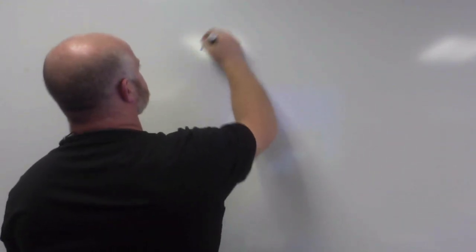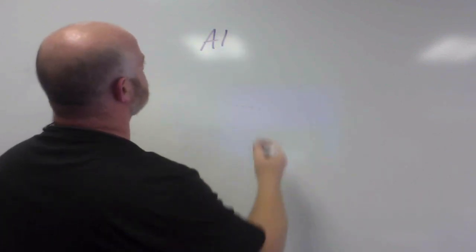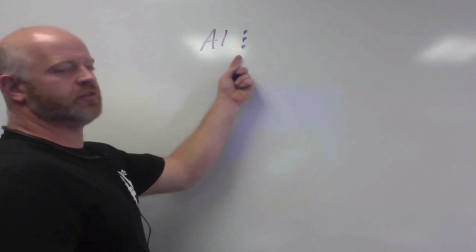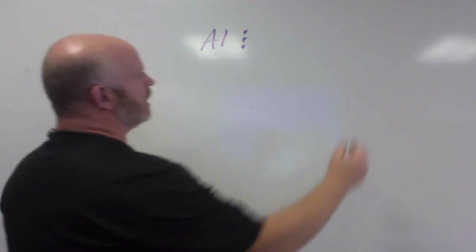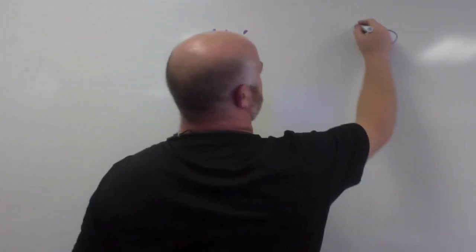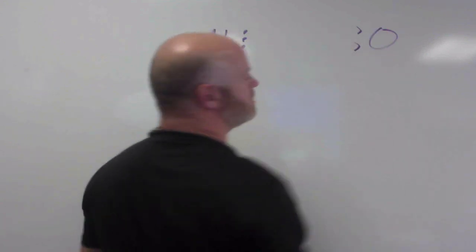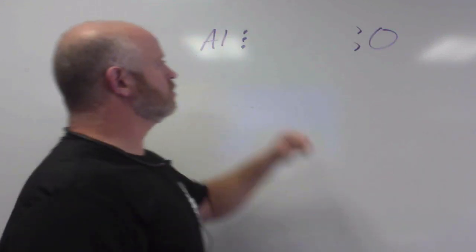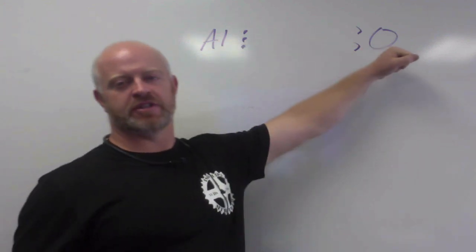aluminum has three valence electrons in group 13, where oxygen, it has two spots that are open. It wants to gain two electrons. So, aluminum wants to give away three. Oxygen wants to gain two.